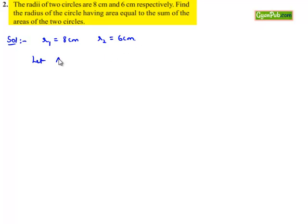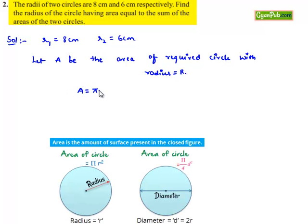Let A be the area of the required circle with radius R. Then A will be equal to π R² as it is the formula for area of the circle.